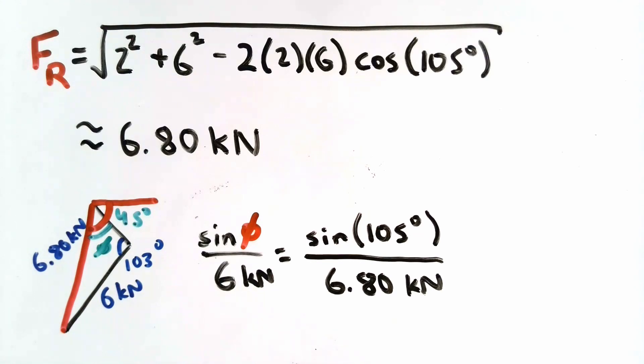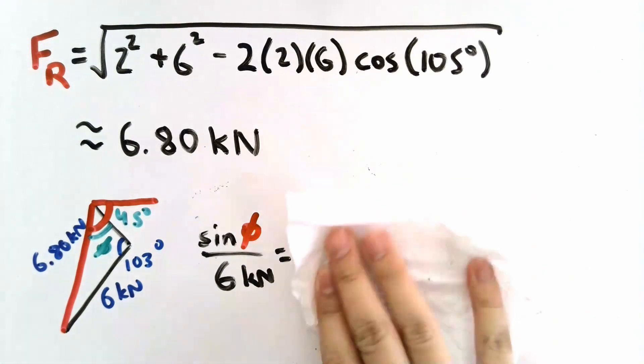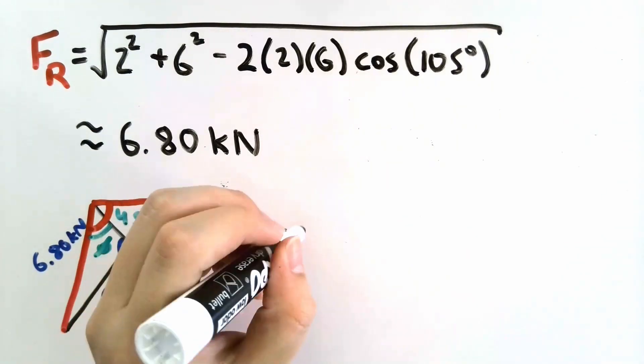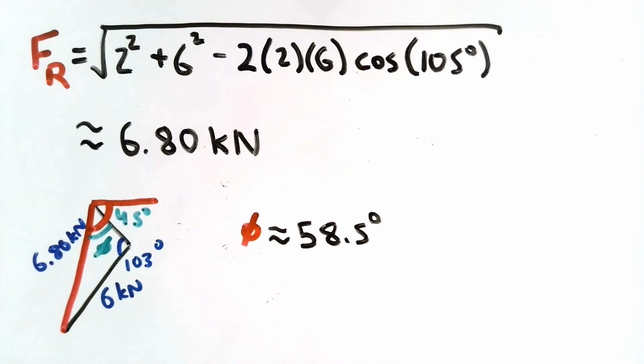If we look at the sine law, applying the sine law will tell us. Notice that in this equation, we really only have one unknown, and that is phi. So we can now solve for the unknown angle phi. Phi should be equal to the inverse sine of 6 over 6.80 times the sine of 105.